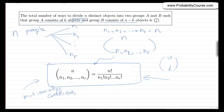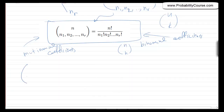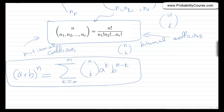By the way, n choose k is called a binomial coefficient. The reason is that if you're familiar with the expansion of (a plus b) to the power of n, we have the formula: the sum from k equals 0 to n of (n choose k) times a to the k times b to the n minus k. This is from algebra, and that's why these n choose k values are called binomial coefficients.